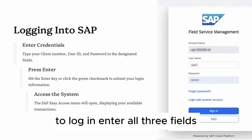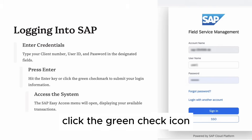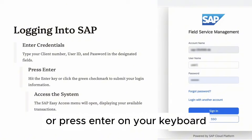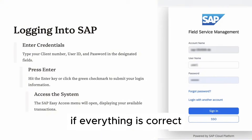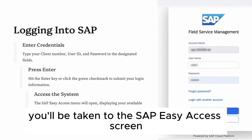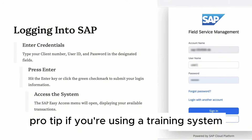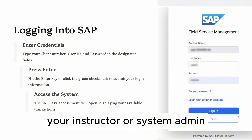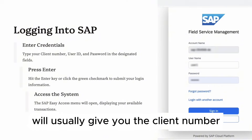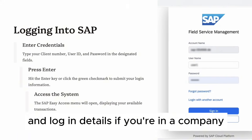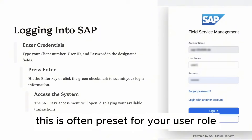To log in, enter all three fields and click the green check icon or press Enter on your keyboard. If everything is correct, you'll be taken to the SAP Easy Access screen — this is your starting point. Pro tip: if you're using a training system, your instructor or system admin will usually give you the client number and login details. If you're in a company, this is often preset for your user role.